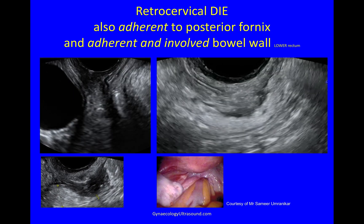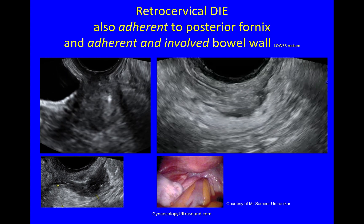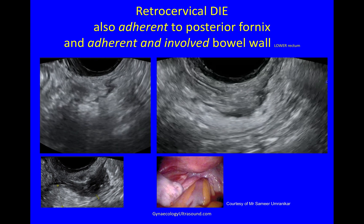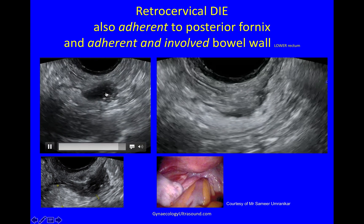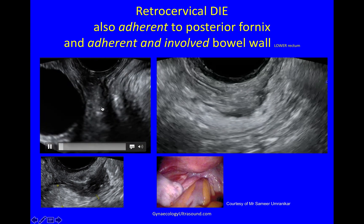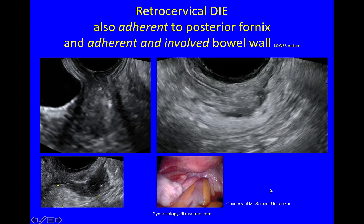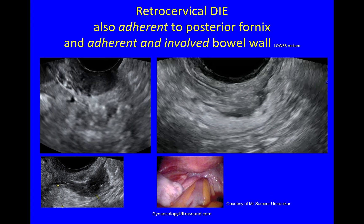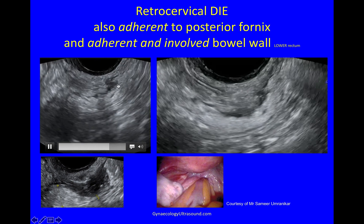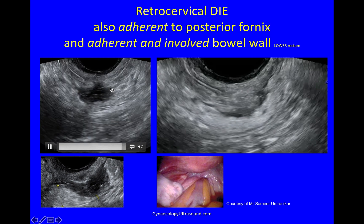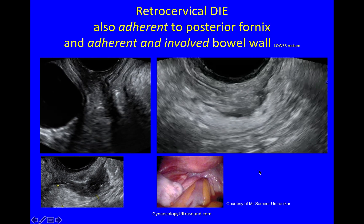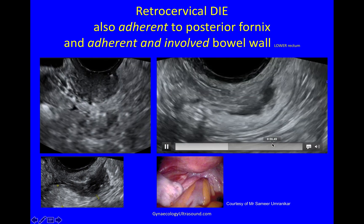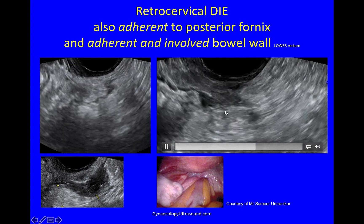And in the video this is what that looks like. There's the probe going down the vagina into the posterior fornix, and there you can see a bowel nodule just there. You can see it's going down, you can see some fibrosis and you can see the bowel nodule. This would be lower rectum, and in this video I'm just looking at the bowel nodule in a bit more detail.